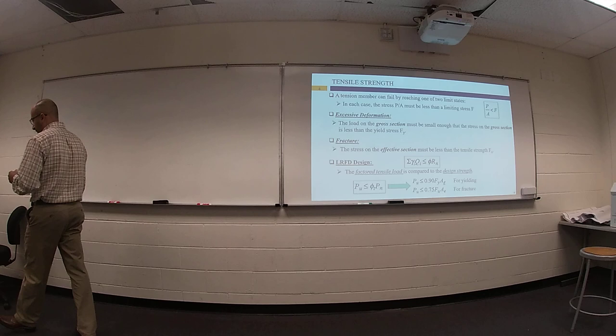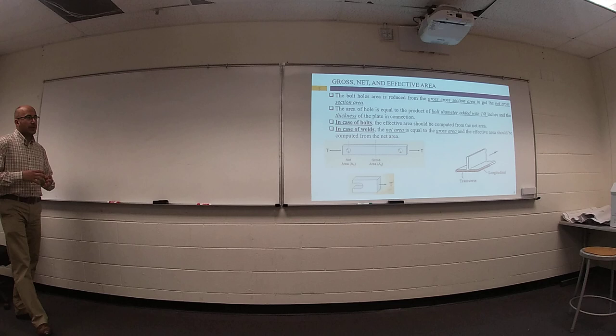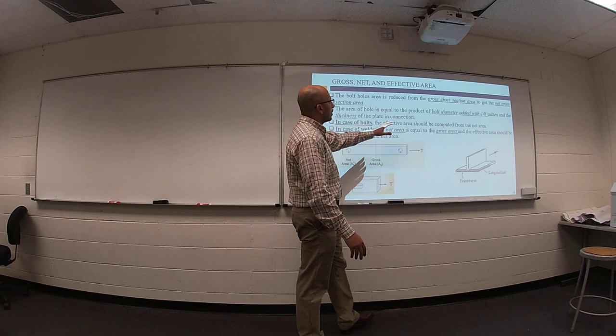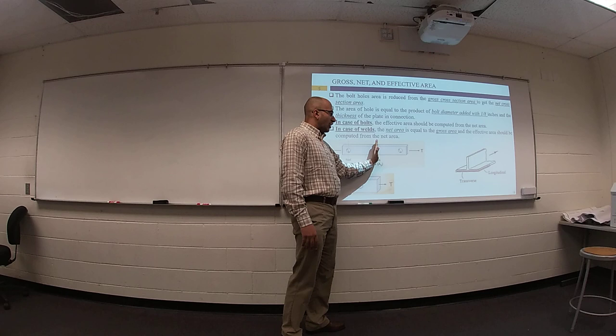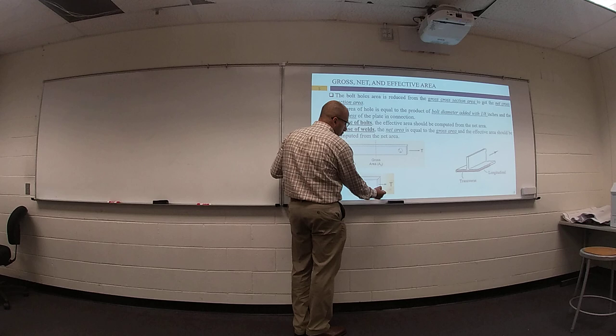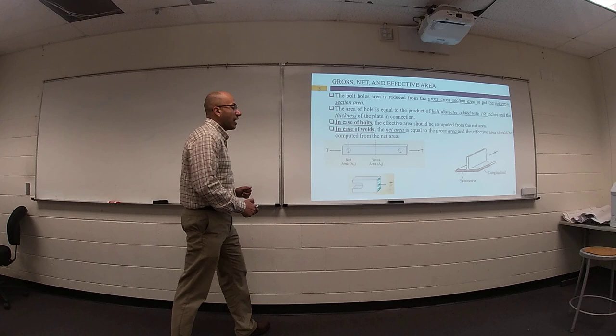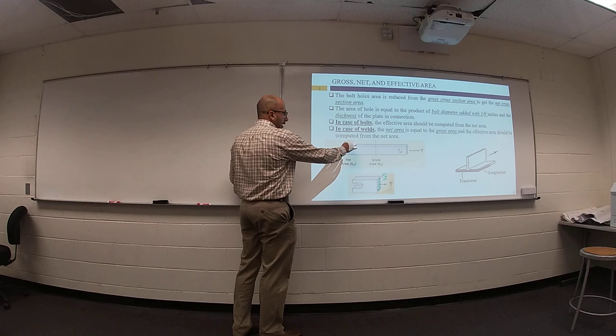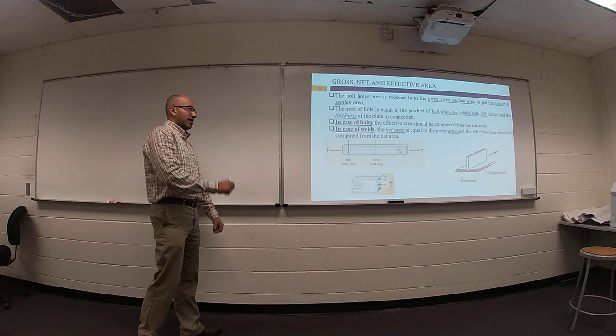Last time we talked about the difference between area gross and area net. Today we will talk about effective area. Gross area at this cross section we don't have holes, so at this location your member has total cross section that can work. But if you cut at the location of your hole, we have subtraction which is called area net.